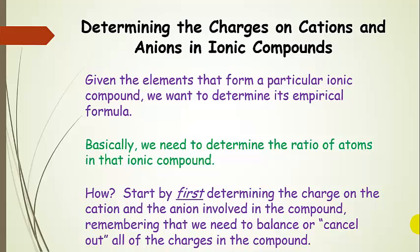From the previous section, if we have calcium, we know that calcium forms a plus 2 cation. If we have fluorine over in the non-metal section, we know that it forms a minus 1 anion. So the first thing we always do is identify the cation or anion formed for that element.